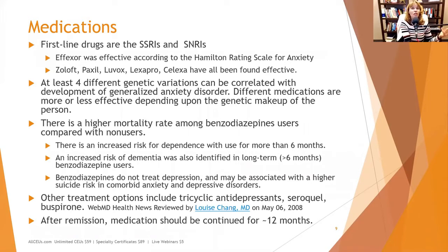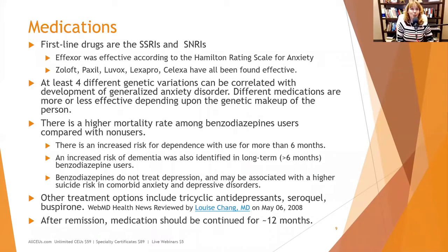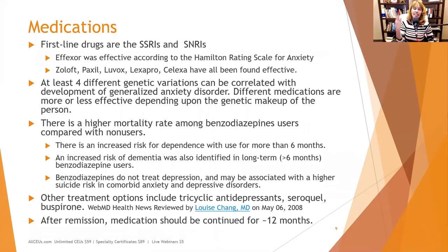In the last five years, Effexor has come onto the radar and been found effective according to the Hamilton Rating Scale for Anxiety — another option if clients aren't getting the treatment effect they need from other medications. None of us are probably prescribers, but we do need to educate clients about why the first, second, or even third drug the doctor tries may not work, so they don't start feeling helpless and hopeless. There are at least four different genetic variations correlated with generalized anxiety disorder development.